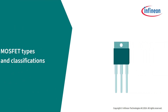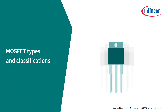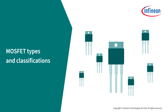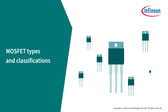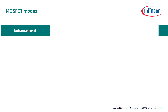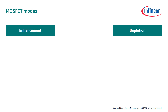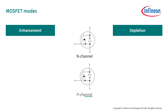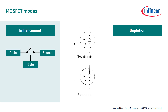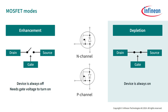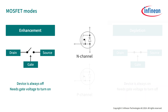If you decide to choose a MOSFET, there are several types available. There are two different MOSFET modes: enhancement and depletion. Both of these modes have two channel types: the N channel and the P channel. The enhancement mode means that the device is always off and needs a gate voltage to turn on. The depletion mode means that the device is always on and needs a gate voltage to turn off. Today, the most commonly used power MOSFETs are N-channel enhancement type devices.